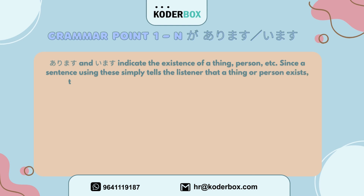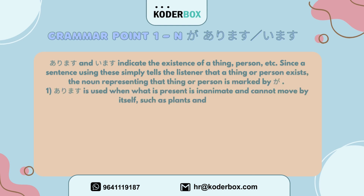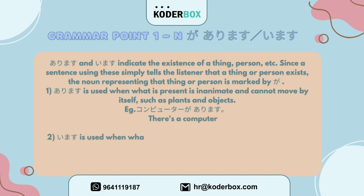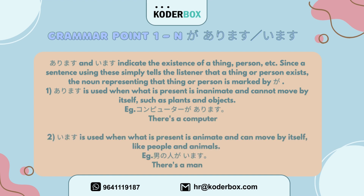Arimasu and imasu indicate the existence of a person, thing, etc. Since a sentence using these simply tells the listener that a thing or person exists, the noun representing that thing or person is marked by ga. First, arimasu is used when what is present is inanimate and cannot move by itself, such as plants and objects. Example: Konpyuutaa ga arimasu — There is a computer.